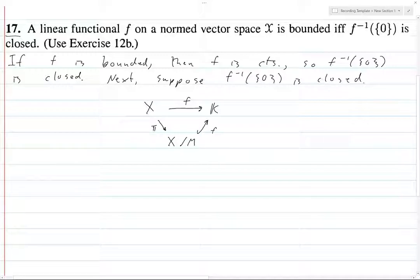This is a little bit of an algebra thing, but it ends up making this problem very quick. So we have this f bar. This projection map sends an element x to the quotient x plus m.